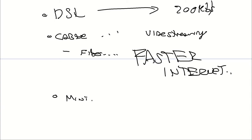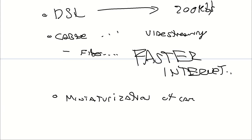Also more specific to certain scenarios is the miniaturization of cameras and other equipment that allows clandestine recording of events, such as recording a movie in a movie theater and then posting it online, or recording a musical or theatrical performance and transmitting it to the internet.